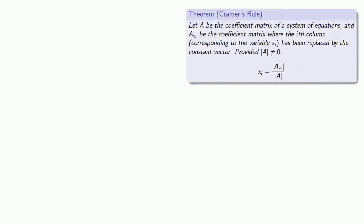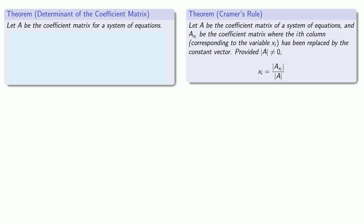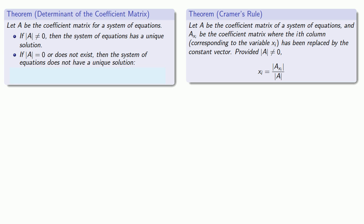However, the generalization of Cramer's rule does give us a very important result. If the determinant of A is not equal to 0, then our xi's have unique solutions because the determinants have unique values. And the real importance is the journey, not the destination. And in this particular case, the journey tells us the following. Let A be the coefficient matrix for a system of equations. If the determinant of A is not equal to 0, then the system of equations will have a unique solution. On the other hand, if the determinant of A is equal to 0, or fails to exist because our coefficient matrix might not have a determinant, then the system of equations will not have a unique solution. And there are two possibilities at this point. Either the system of equations has infinitely many solutions, or the system of equations might have no solutions at all.